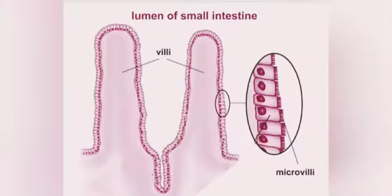Now, we can see in this diagram that there are small finger-like projections. This finger-like projection is called villi. It is found at the inner wall of the small intestine.